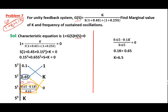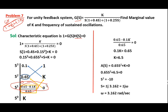If the whole row becomes zero, we need to find the auxiliary equation. We already got the marginal value, that is 6.5. The auxiliary equation is formed from the S² row: 0.65 into S² plus K equal to 0. This is the auxiliary equation, where 0.65 is the S² coefficient and K is the S⁰ coefficient.